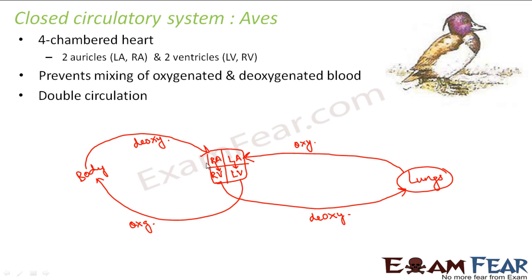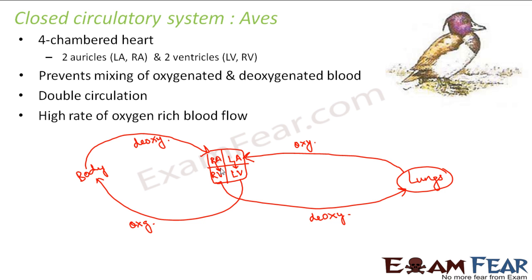The right auricle deals only with deoxygenated blood, and the left auricle deals only with oxygenated blood. Similarly, the right ventricle deals only with deoxygenated blood and the left ventricle only with oxygenated blood. There is no way oxygenated and deoxygenated blood can mix — that is one advantage of having four chambers. It is called double circulation because the blood passes through the heart twice in one cycle. This circulatory system is the same for both Aves and mammals, resulting in a high rate of oxygen-rich blood flow.